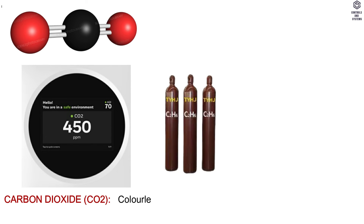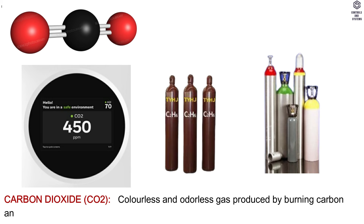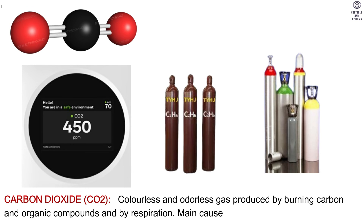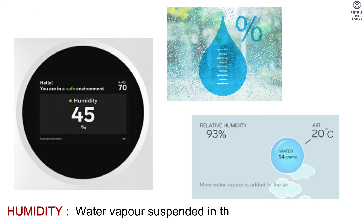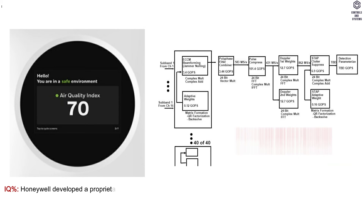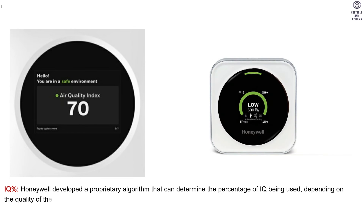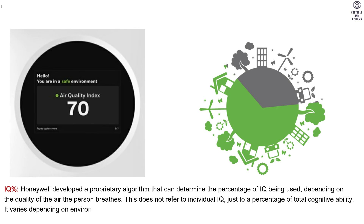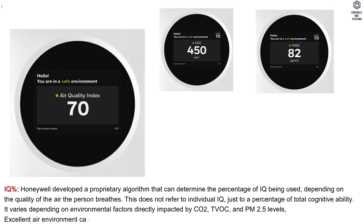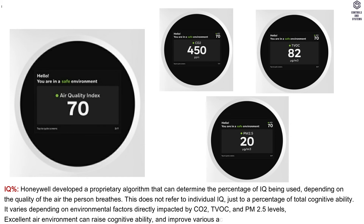Carbon dioxide (CO2): a colorless and odorless gas produced by burning carbon and organic compounds and by respiration. The main cause of buildup is poor ventilation. Humidity: water vapor suspended in the air. IQ%: Honeywell developed a proprietary algorithm that can determine the percentage of cognitive ability being used depending on the quality of the air a person breathes. This does not refer to individual IQ, just to a percentage of total cognitive ability. It varies depending on environmental factors directly impacted by CO2, TVOC, and PM2.5 levels. An excellent air environment can raise cognitive ability and improve various activities.